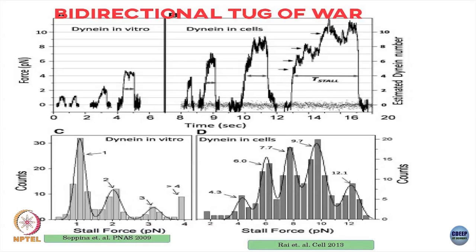A peak at 1 piconewton would mean the cargo was carried by only 1 dynein motor; when you applied 1 piconewton that dynein came to a stop. Maybe this cargo was carried by 2 dynein motors, so 2 piconewtons were needed, and so on. Most cargo in vitro was carried by 1 single dynein motor, whereas inside cells most cargo would be carried by around 7 to 9 dynein motors, because the peaks are around 7.7 or 9.7 piconewtons. Per dynein motor, the stall force is roughly 1 piconewton for this class.